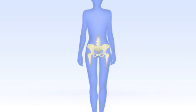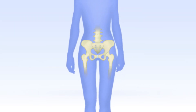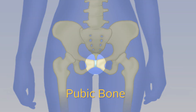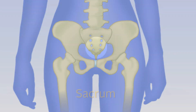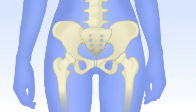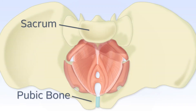The pelvic floor is positioned at the base of the pelvis, inserted anteriorly to the pubic bone, posteriorly to the coccyx, and laterally to the lower pelvic bones. If you look inside the pelvis, with the pubic bone at the bottom of the picture and the sacrum at the top, you can see that the pelvic floor muscles form the floor of the lower pelvic cavity.